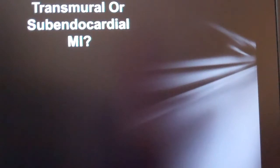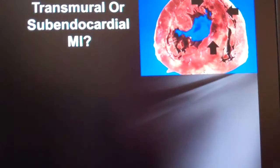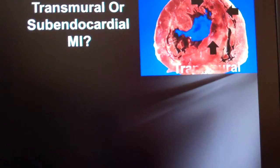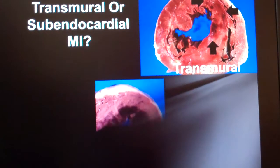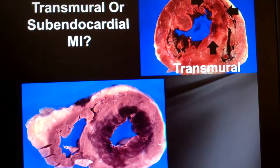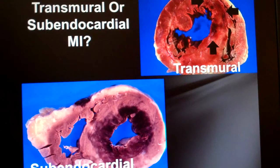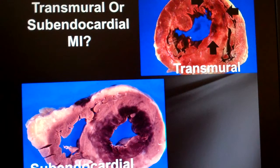Looking at the pictures: which type of heart attack occurred in each? Transmural — see how those three arrows point to three separate layers of the heart. And subendocardial — just that middle layer. It may look worse than the other one, but we're talking about the layers involved. That seems like a good place to stop, so we'll pick it up next time. Thank you.